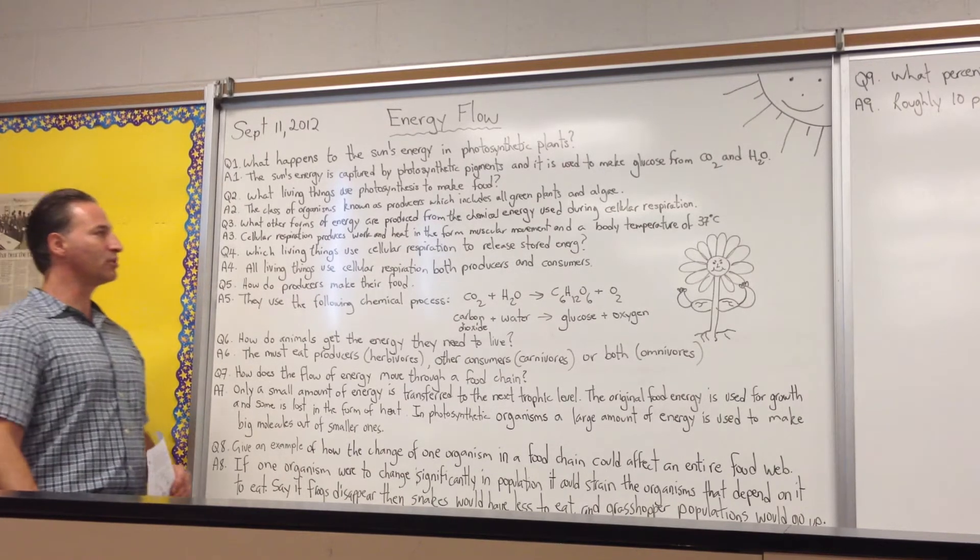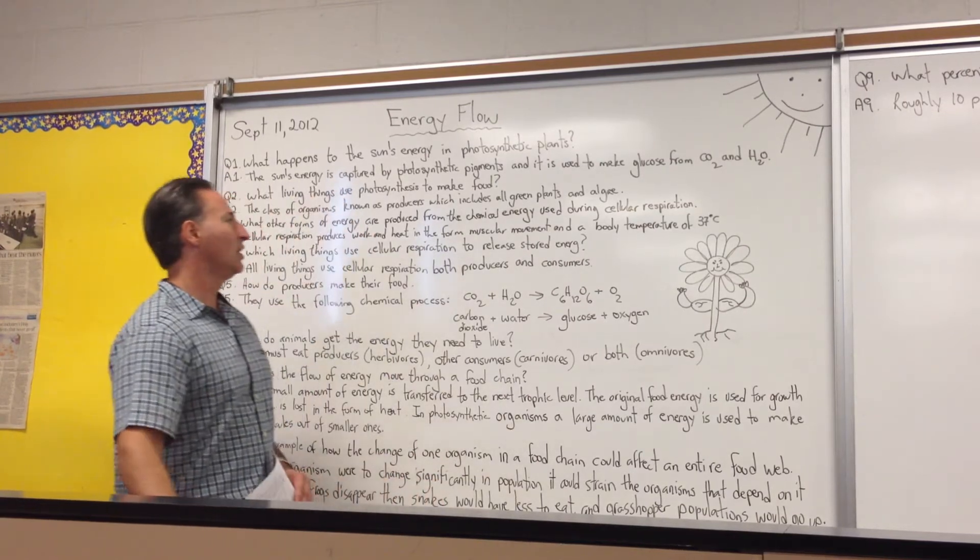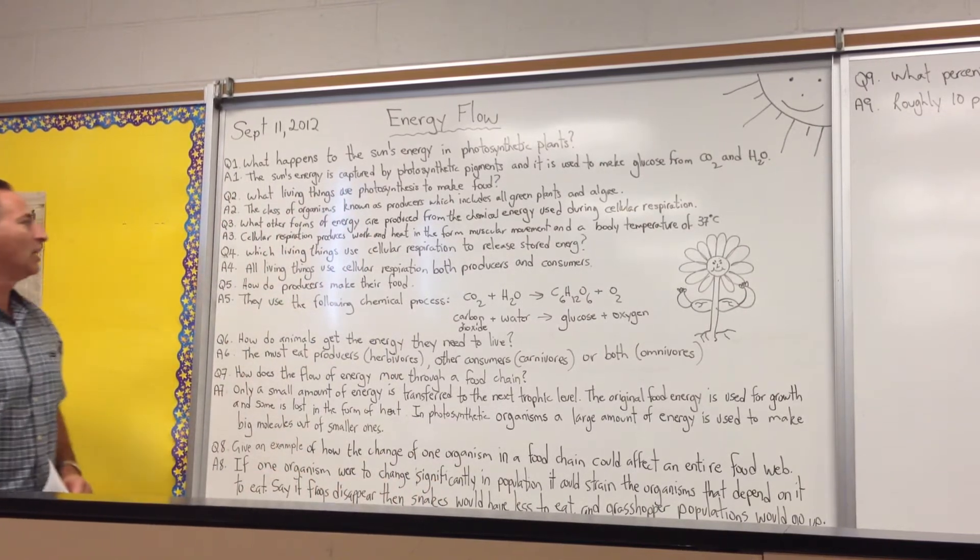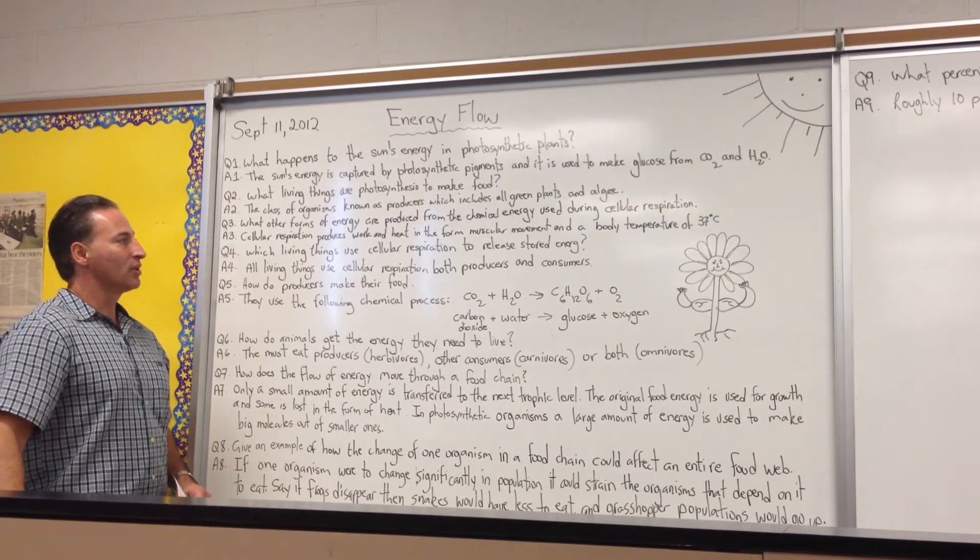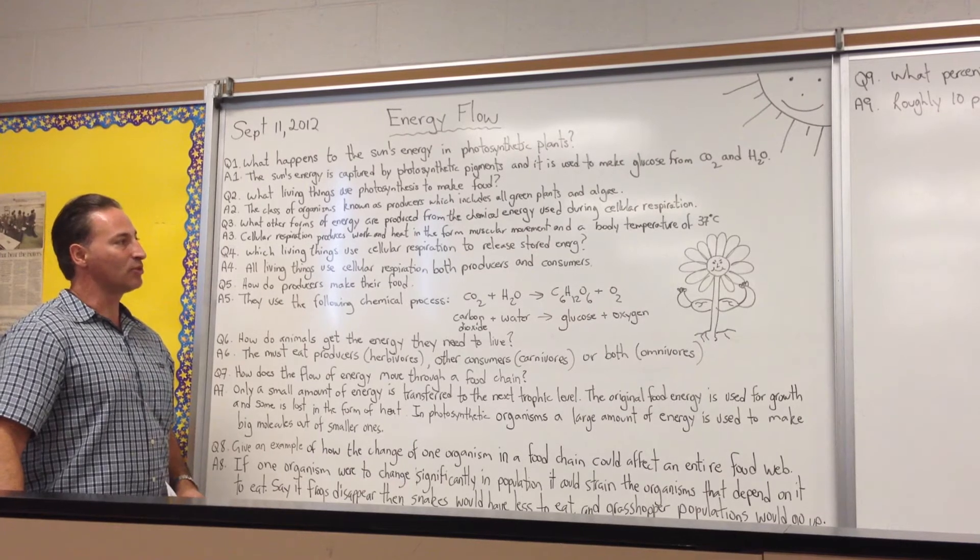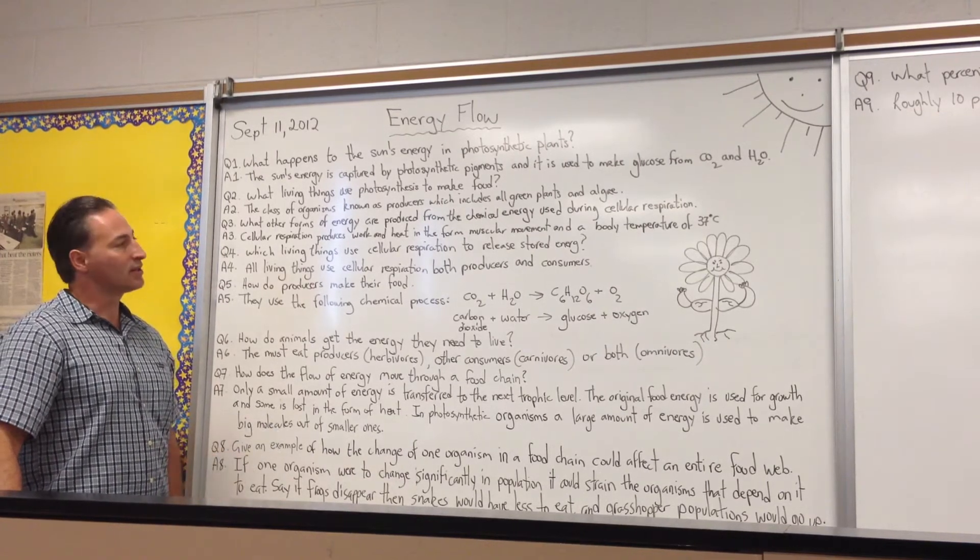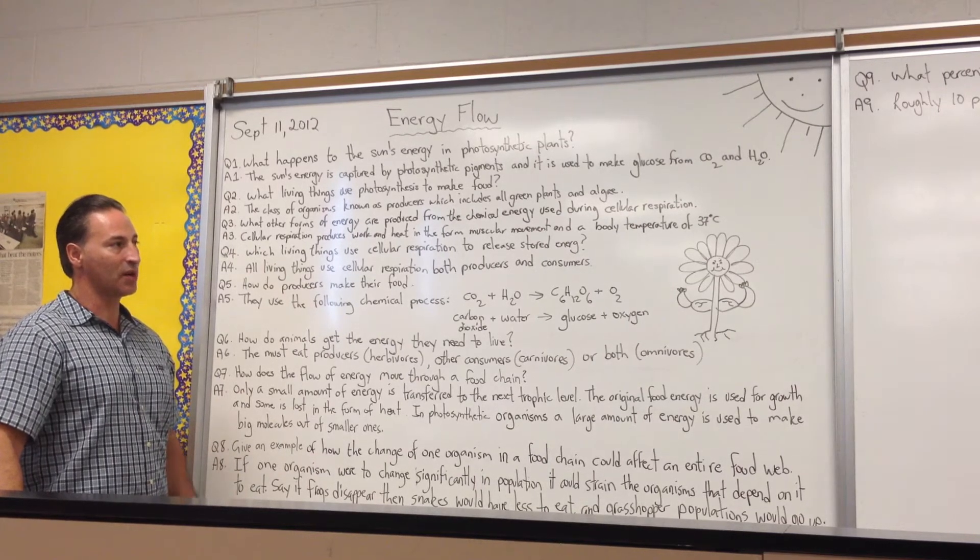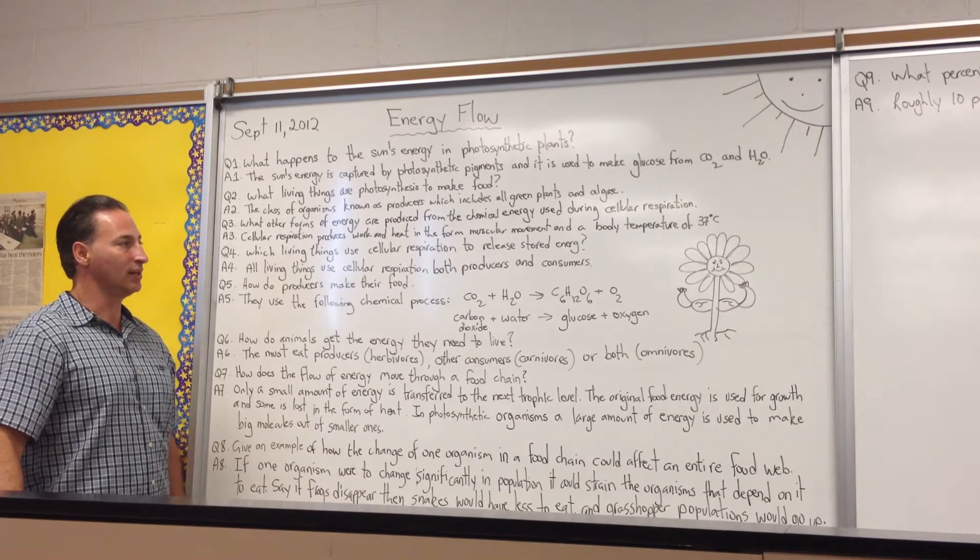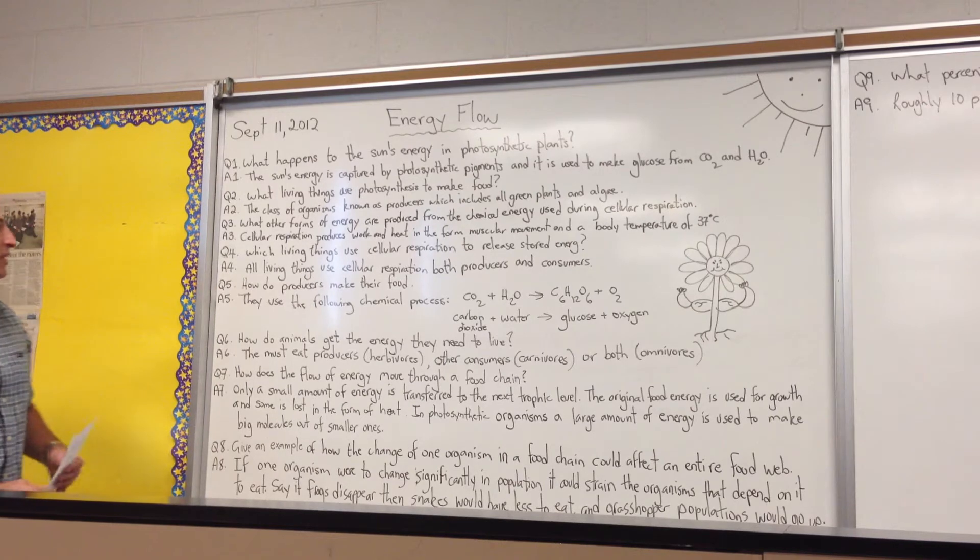The third question is, what other forms of energy are produced from the chemical energy used during cellular respiration? Well, there are two things that are produced. Cellular respiration produces work and heat. So, the work is in the form of muscular movement. And in the case of the human body, it's maintaining the body temperature at 37 degrees Celsius. So, when our muscles work, they produce heat. So, some of the energy goes into growing. Some of the energy, a lot of the energy goes into the form of heat.